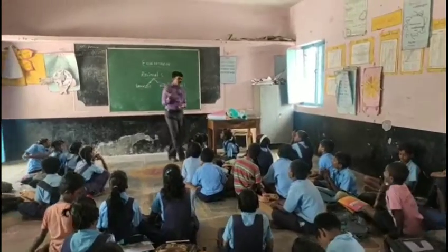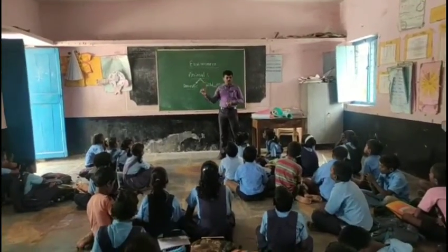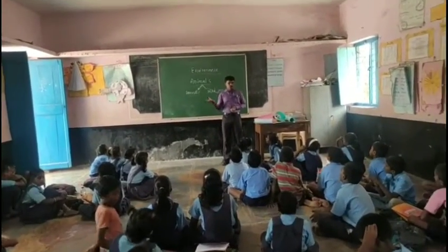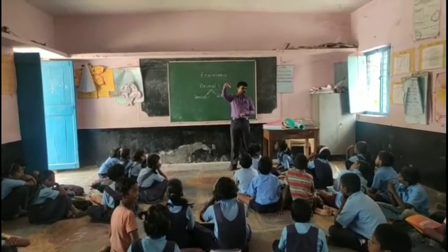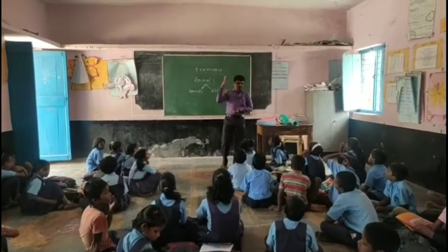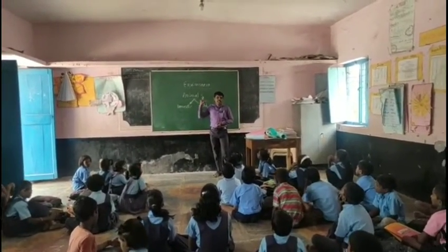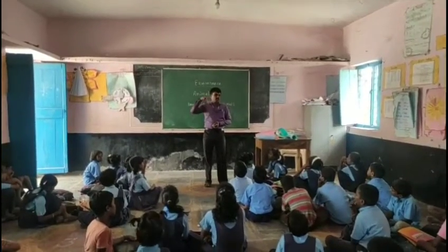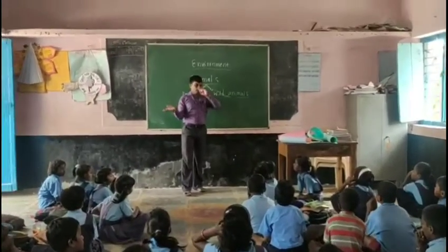All these animals are called wild animals. Like example, lion — lion is a cruel animal. It is attacking other animals. It is eating meat. So if you go to the forest, lion will attack you. So these are dangerous animals in the forest.